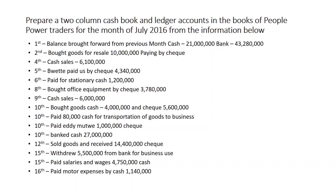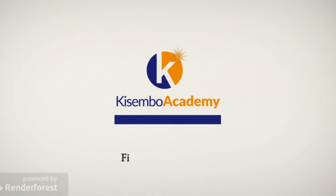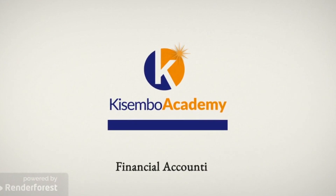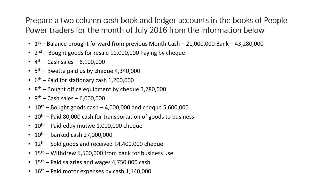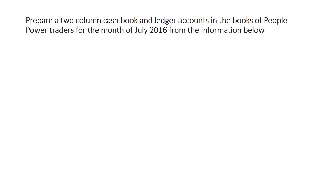Hello everyone, it's Rangakuramia Arnold and this is Kisembo Academy. Right on your screen are a set of transactions that we are going to be posting to a 2-column cash book. There are about 15 transactions and I'll get straight to the first transaction.